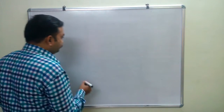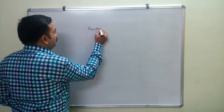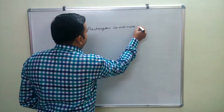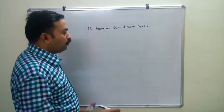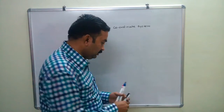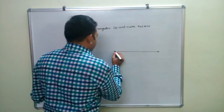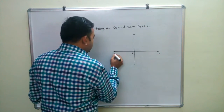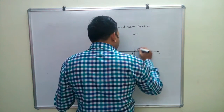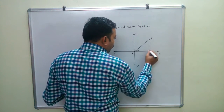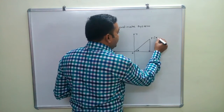Now, Rectangular Coordinate System. We also call it Rectangular Coordinate Geometry, Cartesian Coordinate Geometry, or simply Coordinate Geometry. Here you see this is the x-axis and this is the y-axis, this is the origin, this is x, this is x-dash, y, and y-dash. Take one acute angle theta here and draw a perpendicular. This is point P.